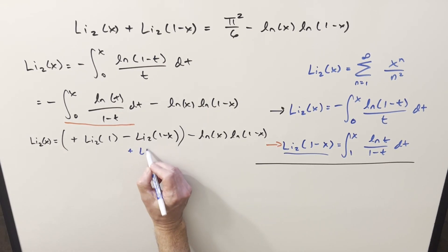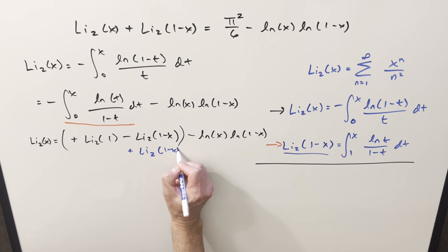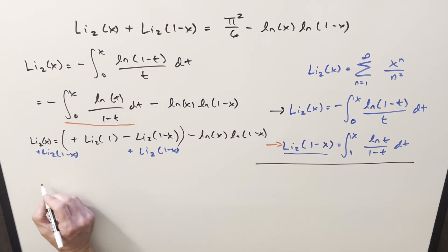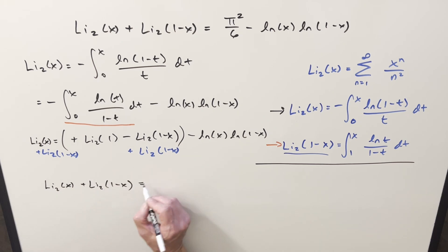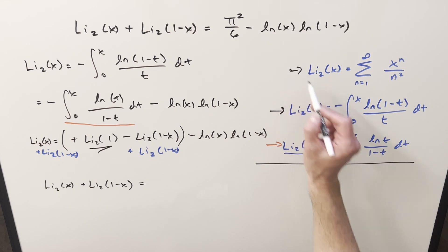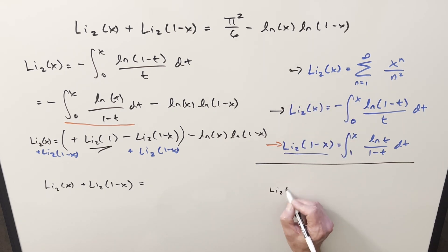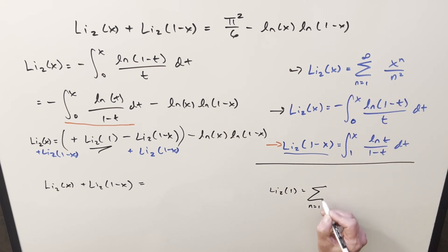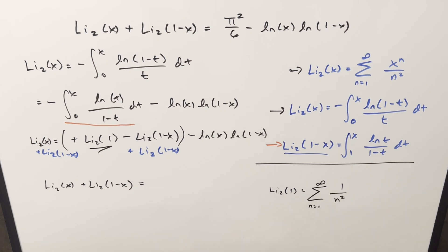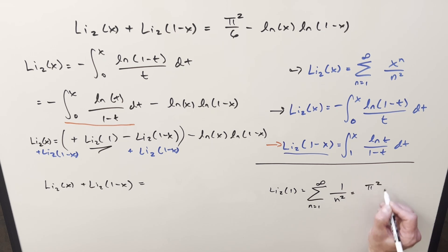Adding Li₂(1 − x) on both sides gives us Li₂(x) + Li₂(1 − x) on the left side. For Li₂(1), we can just plug 1 in for x using our series definition, and we end up with the sum from 1 to infinity of 1/n². This is the Basel problem — Riemann's zeta function at 2 — and this value is π²/6. So we plug that back in.